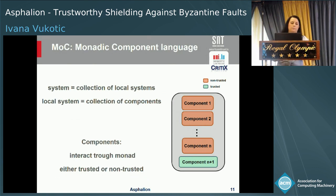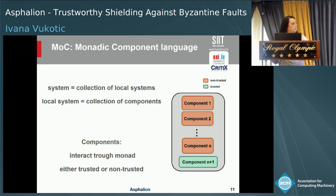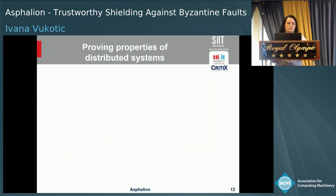Our monadic component language enables implementing systems as a collection of local systems, where each local system is composed of any number of components. To enable different components to call each other, we use monads. Because we reason about hybrid fault-tolerant protocols, our components can be either trusted or non-trusted.